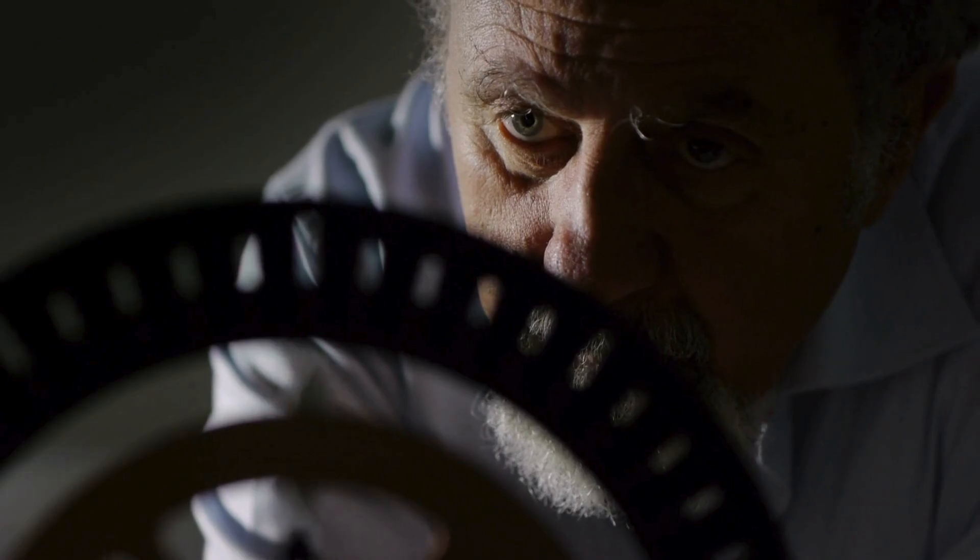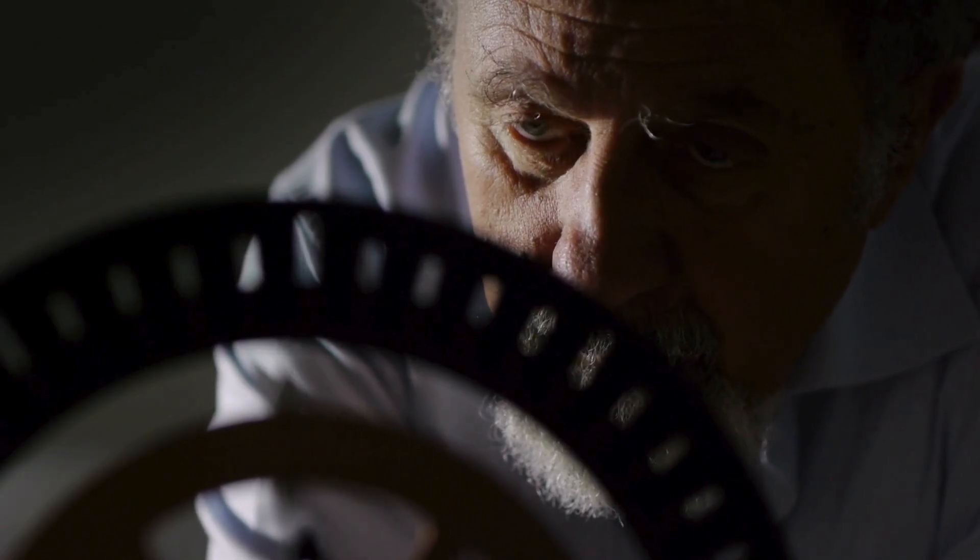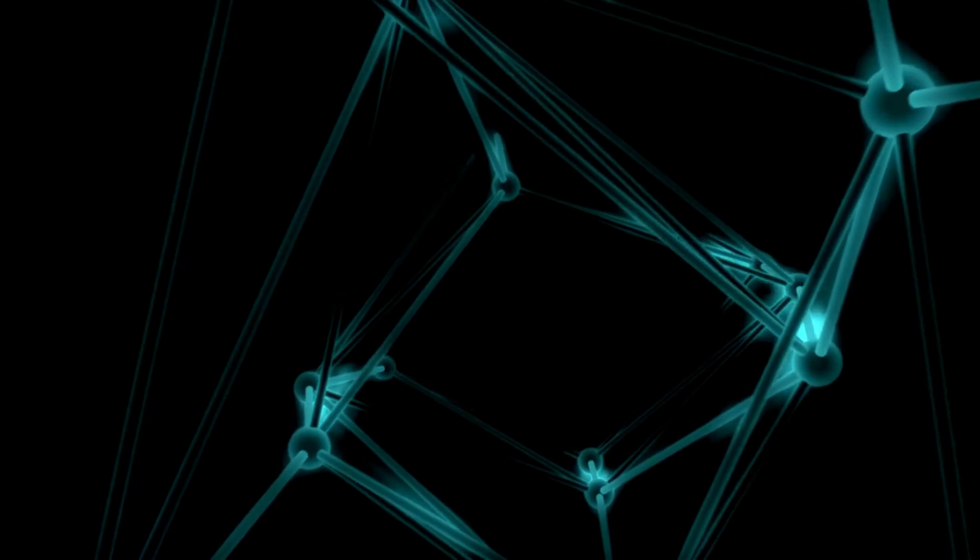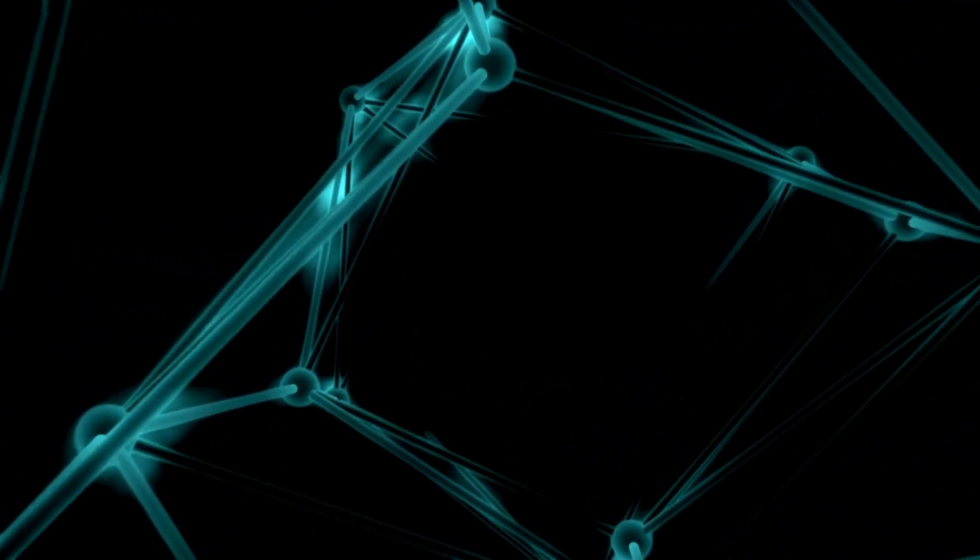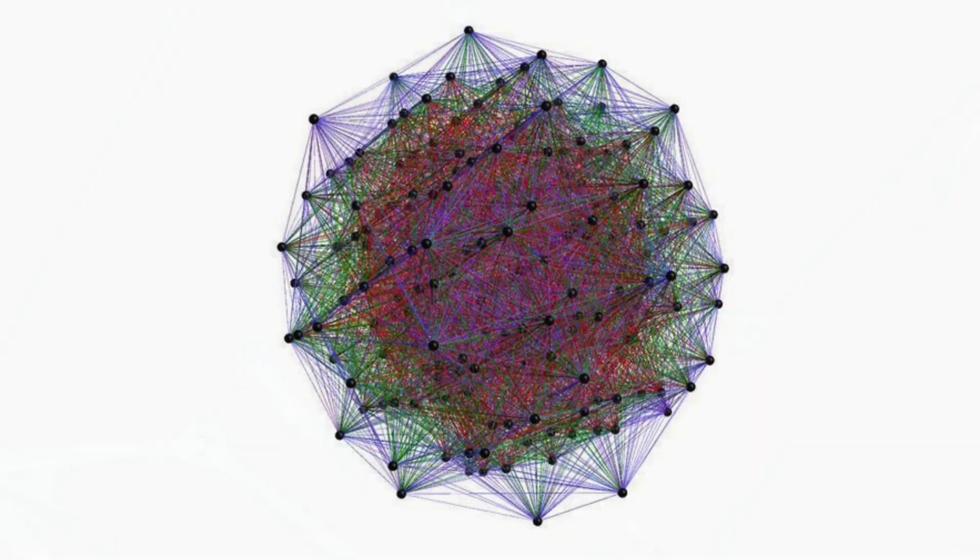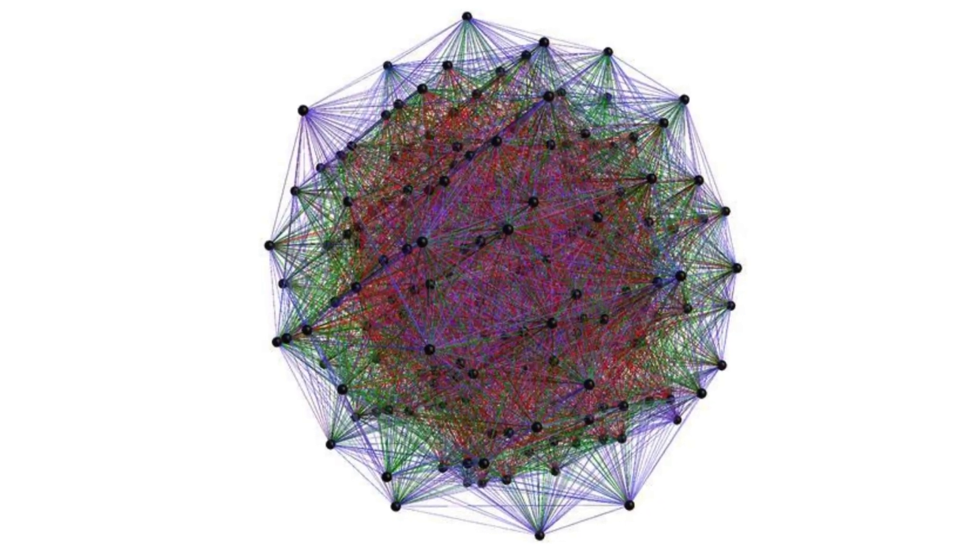Some scientists and mathematicians believe they may have found such a design, the E8 lattice. An eight-dimensional geometric marvel that could connect physics, the mind, and the very fabric of reality.